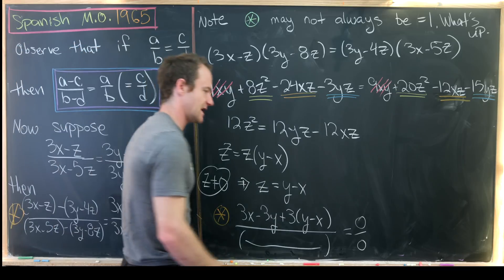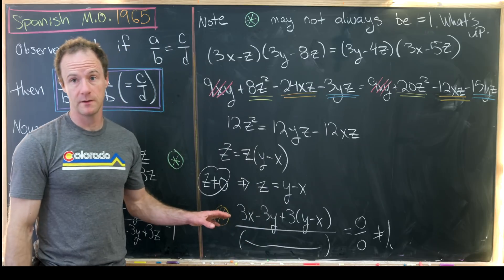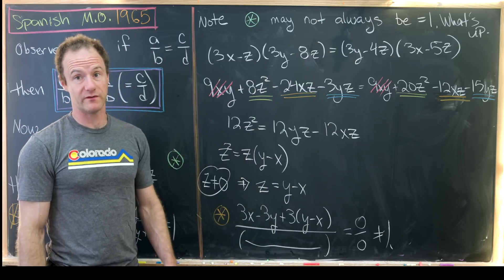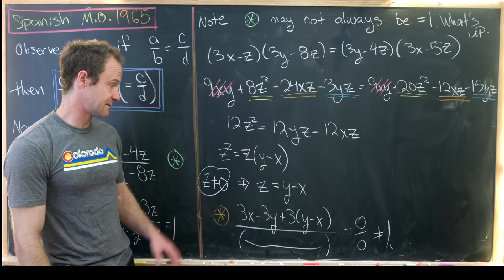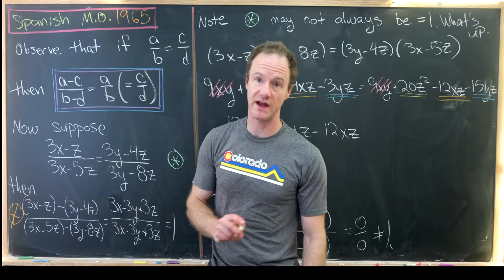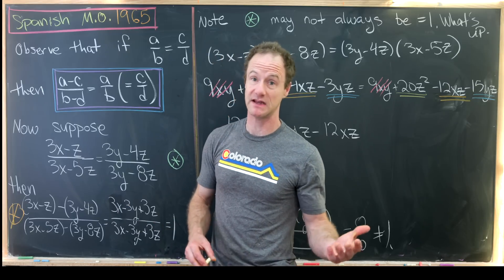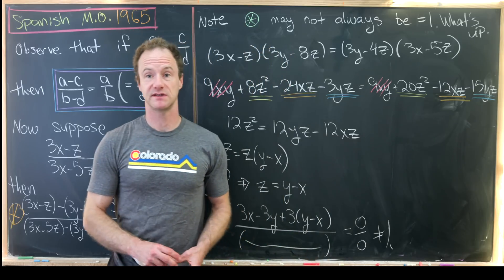And notice that we get 3x minus 3y plus 3y minus x in the numerator and the denominator. I won't rewrite it in the denominator, but you have the exact same thing. But notice that simplifies the numerator down to 0 and the denominator also down to 0. But 0 over 0 doesn't make any sense. It's most definitely not equal to 1. So that's the problem that we've uncovered is that when z is not equal to 0 in this original equation, then that forces this fraction down here to not make any sense. And that's a good place to stop.